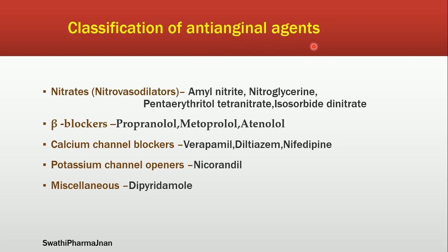Coming to the classification of anti-anginal agents: they are classified into five categories. First is nitrates, also called nitro vasodilators. Second class is beta blockers. Third class is calcium channel blockers. Fourth class is potassium channel openers, and fifth is miscellaneous drugs. Examples of nitrates or nitro vasodilators are amyl nitrite, nitroglycerin, pentaerythritol tetranitrate, and isosorbide dinitrate. Beta blocker examples are propranolol, metoprolol, and atenolol. Calcium channel blockers are verapamil, diltiazem, and nifedipine. Potassium channel openers include nicorandil, and the miscellaneous category includes dipyridamole.